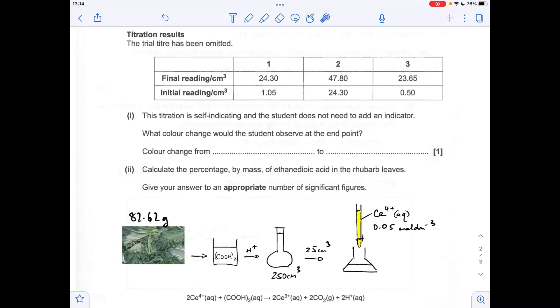So moving on to the titration now. The first thing I've got to do is work out the colour change for this self-indicating titration. So if you think about it, we've got the colourless ethanedioic acid in here, and we've got this yellow Ce4+ solution. So as this goes into here, it reacts and is decolourised. As soon as all that's gone, it's not going to have anything to react with and it'll stay yellow. So the colour change is colourless to yellow.